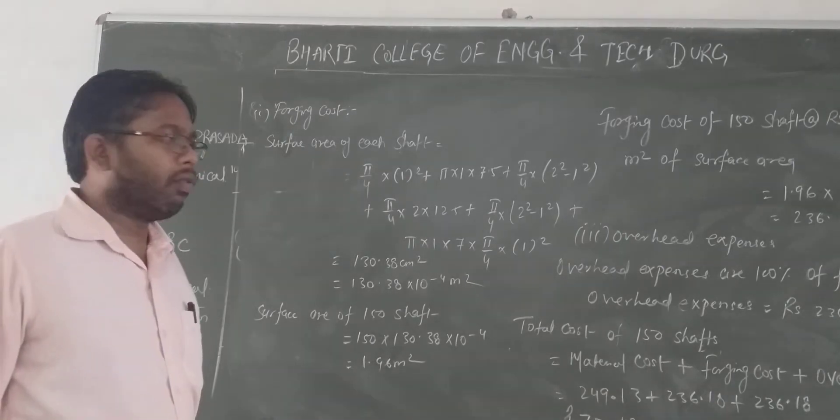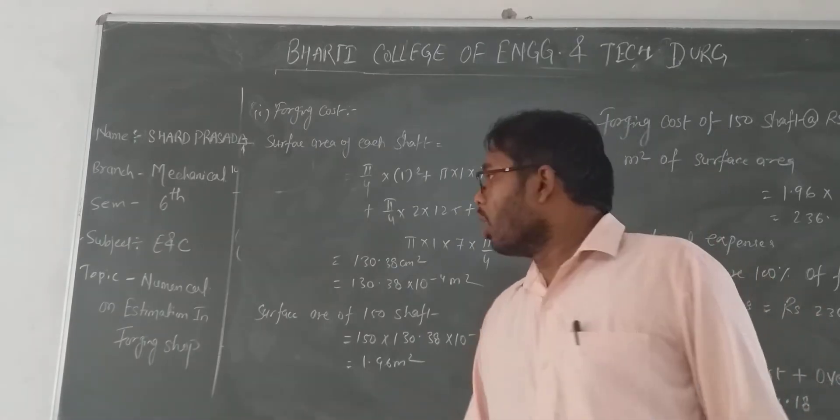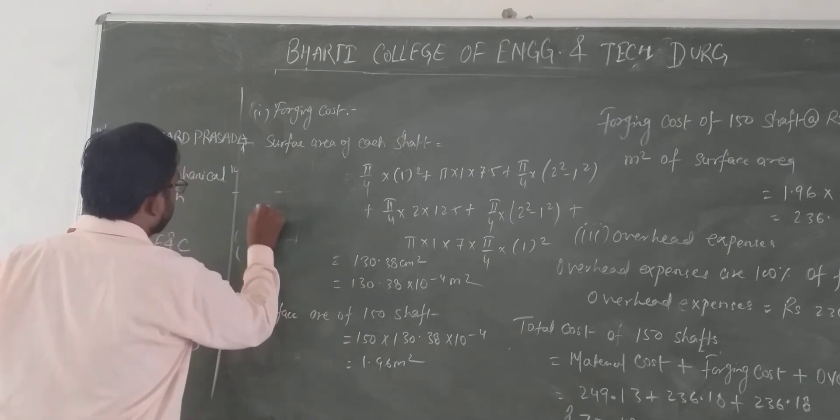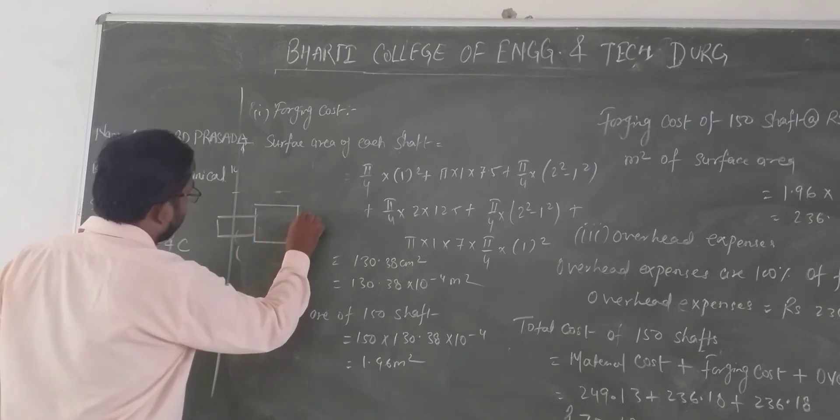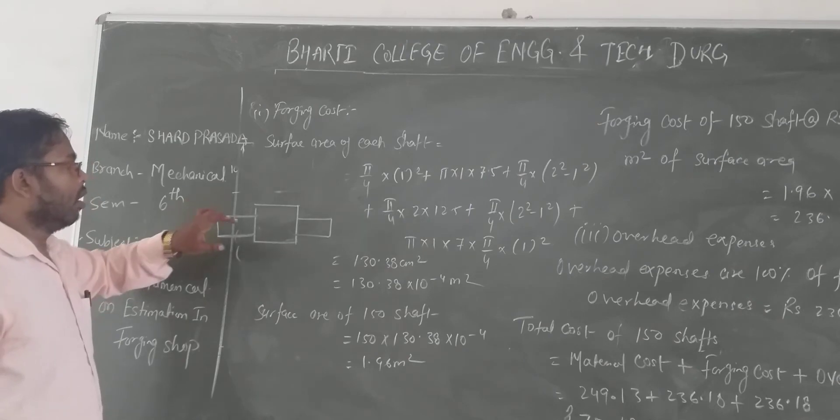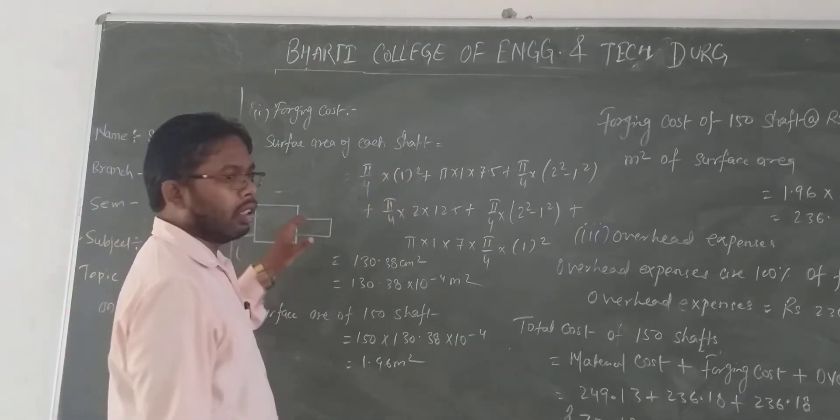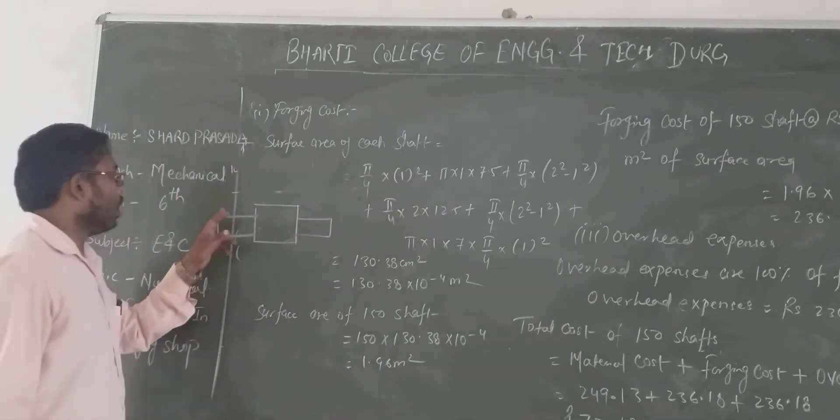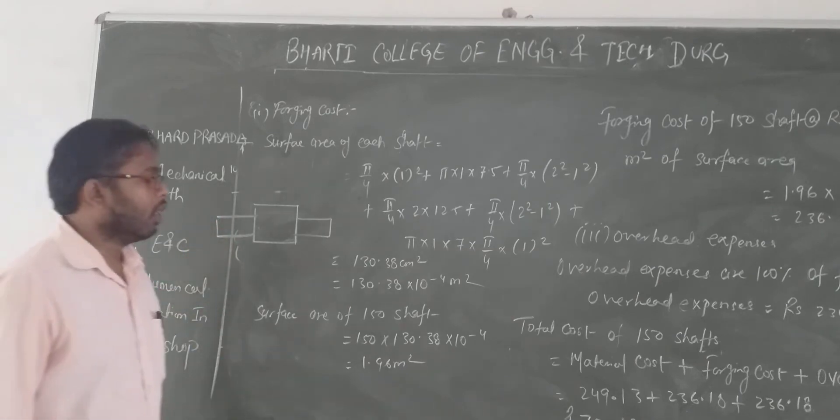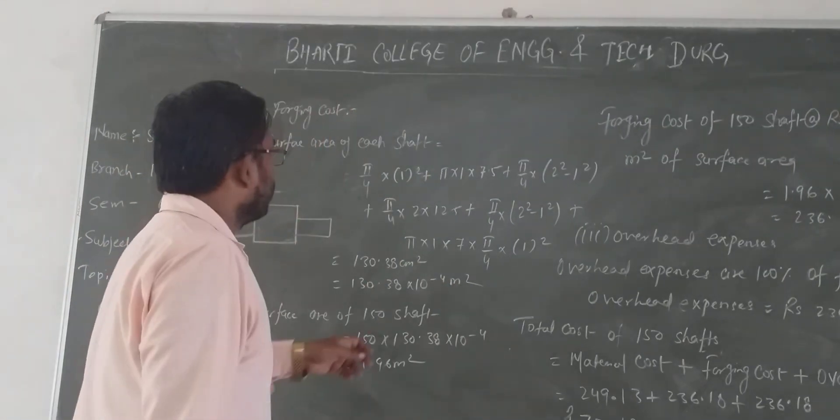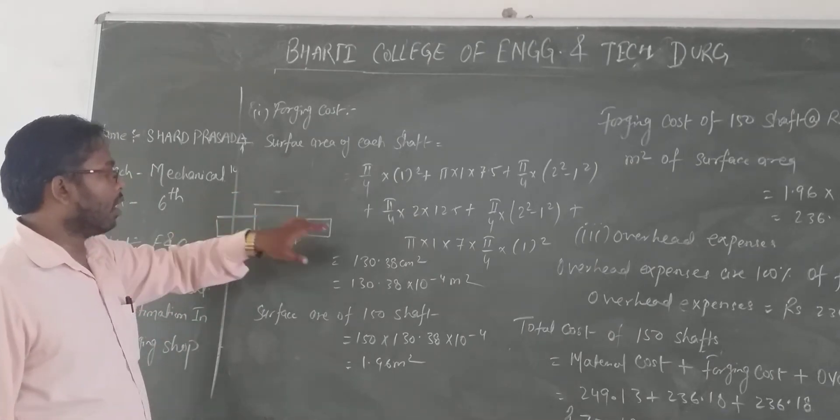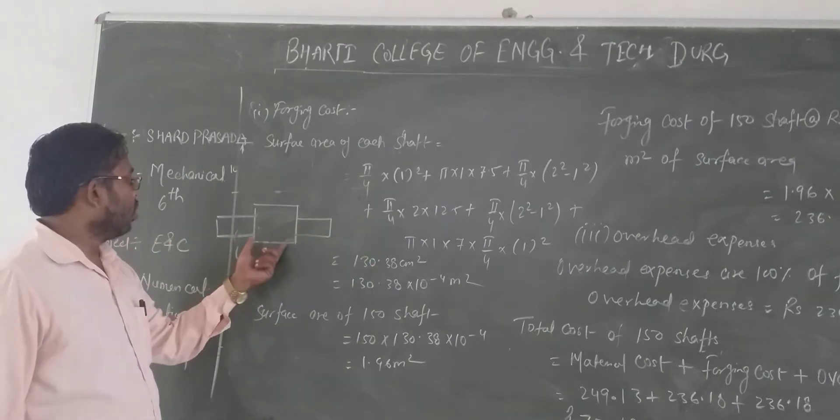Now for surface area. First, π/4 × 1². The area value is π/4 × 1. So π × 1 × 7.5. π/4 × 2² × 12.5 plus π/4 × 1² × 7 plus π/4 × 1².